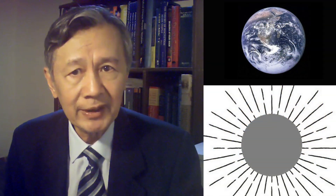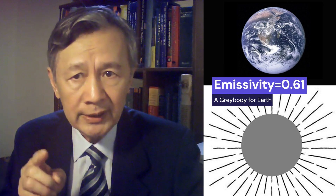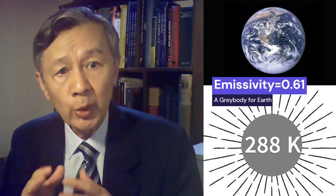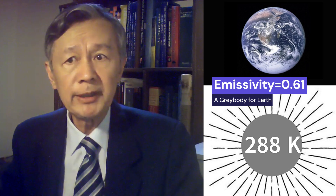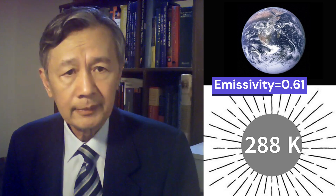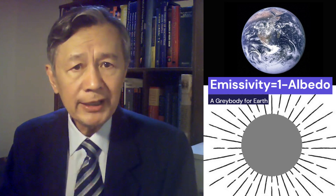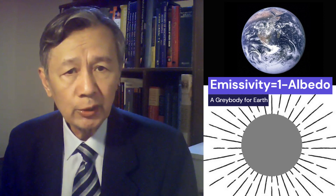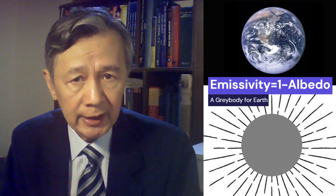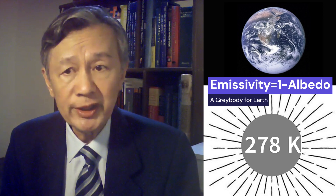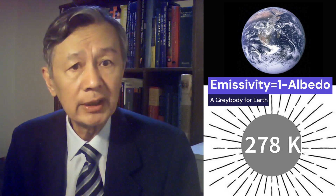Alternatively, one can also use a gray body model for Earth with its atmosphere, if the emissivity is 0.61, as I discussed four years ago. In this way, the observed mean planetary radiance 239 Watt per meter square can be perfectly explained. I had also explained that the emissivity for such a gray body can also be calculated from the measured planetary albedo, which is the reflectivity of the incoming radiation. Namely, emissivity equals 1 minus albedo equals 0.7, which gives the surface temperature 278 Kelvin without invoking the greenhouse effect.